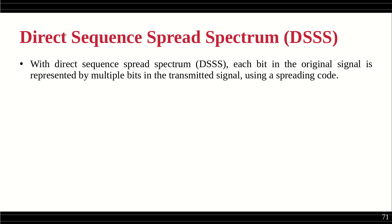With direct sequence spread spectrum, each bit in the original signal is represented by multiple bits in the transmitted signal using a spreading code. In frequency hopping spread spectrum, the spreading code is used to select a particular frequency and we hop from one frequency to another. But here it is different — the frequency will be spread, but that spreading is achieved in a different way.